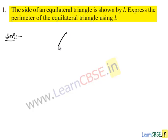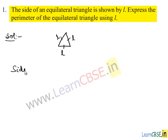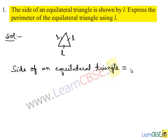First let us take an equilateral triangle. An equilateral triangle is a triangle in which all three sides are equal. In the question they had given us the side of an equilateral triangle is shown by L. One of its sides is L, so the side of an equilateral triangle is equal to L.